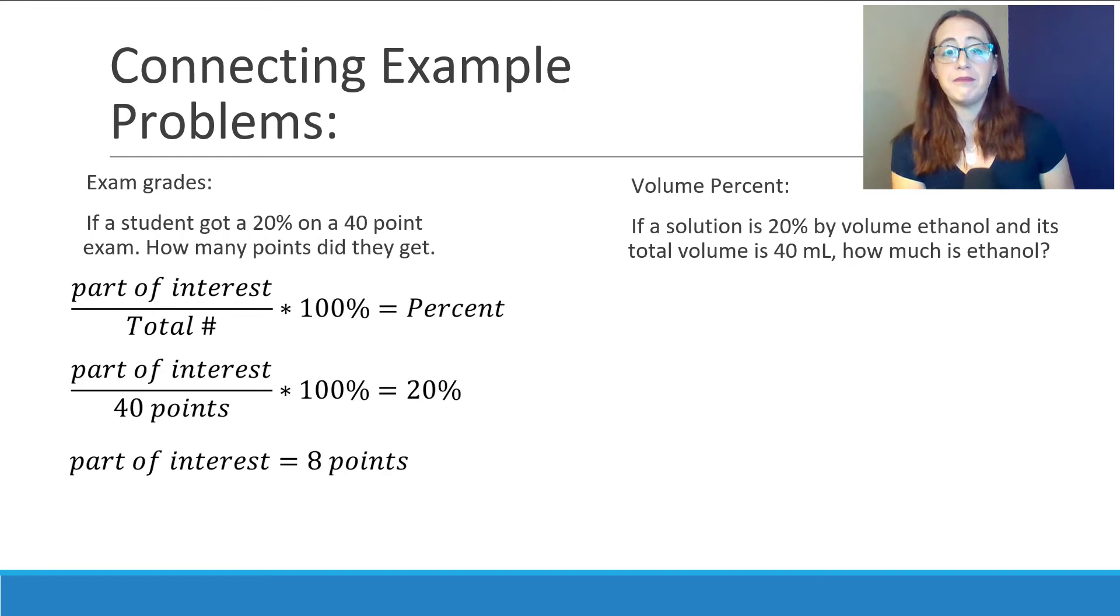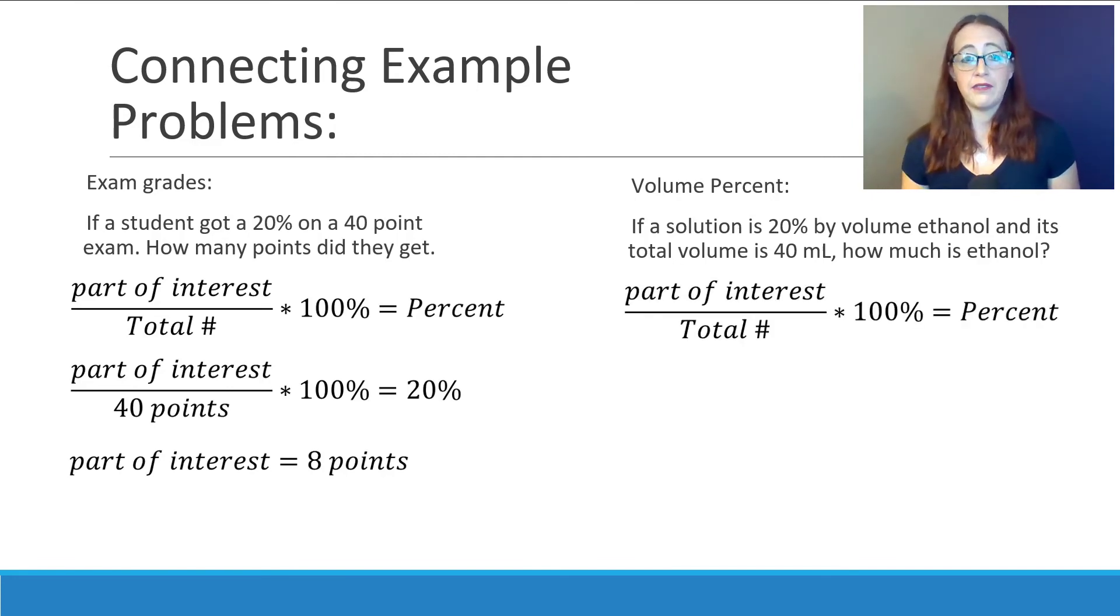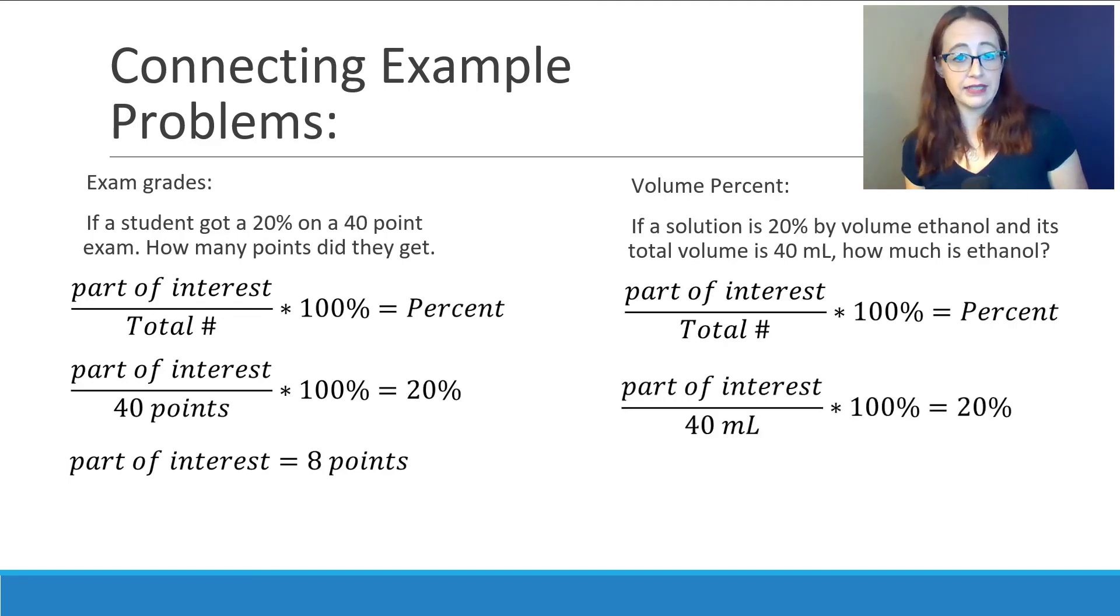We can do the same thing for volume percent. Now might be a good time to pause the video and work on this on your own based on what we've done in the video so far, and then come back when you're either stuck or ready. All right, so this is going to work through the same way as our mass percent and the same way as our exam grade problem. We have a 20 percent by volume ethanol. We have a total volume of 40 milliliters, and so we're going to take our 20 percent, our 0.2, once you divide it by 100 percent, multiply it by our 40 milliliters, to solve for our 8 milliliters.